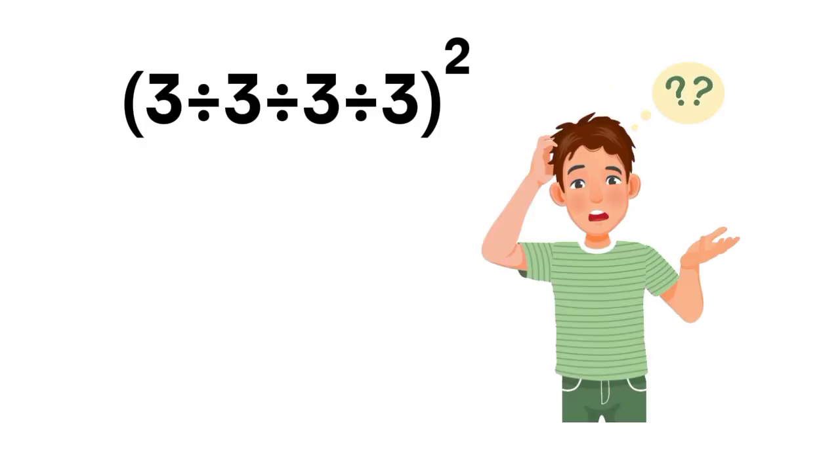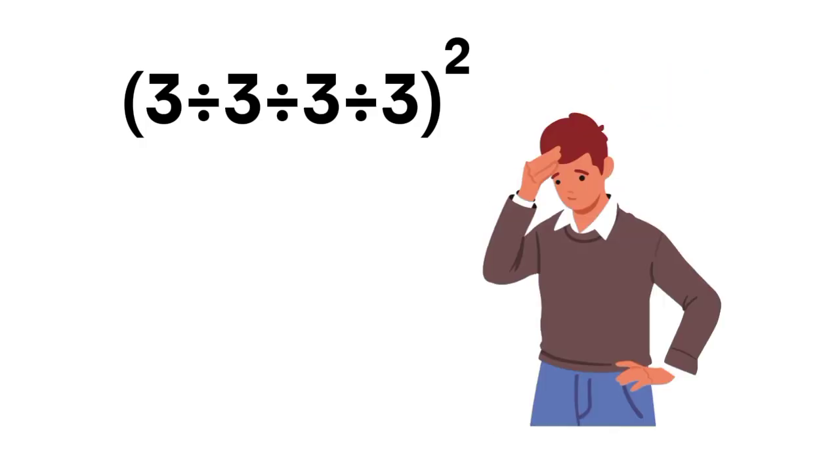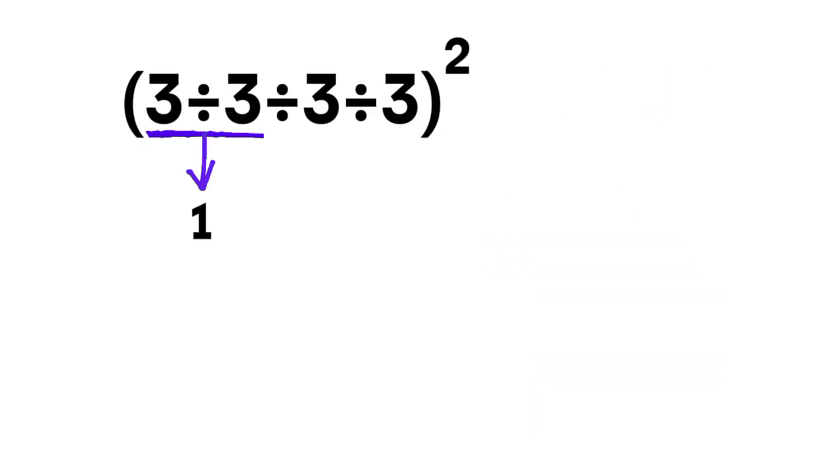Now, here's the common mistake. People think, okay, 3 divided by 3 equals 1. Makes sense, right? Then they take the next 3 divided by 3 and say, oh, that's 1 too. And then 1 divided by 1 equals 1.